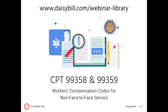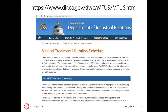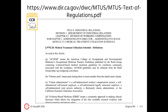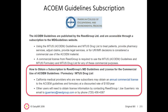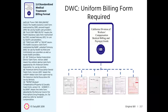The next question: where can I get a copy of the medical treatment utilization schedule? You can find information on California's medical treatment utilization schedule (MTUS) on the Department of Industrial Relations webpage. It directs you to 37 pages of regulations, as well as treatment guidelines developed by the American College of Occupational and Environmental Medicine (ACOEM), which have been adopted into the MTUS — access is purchased through a subscription.